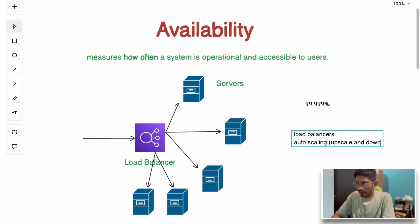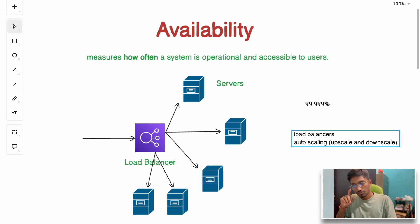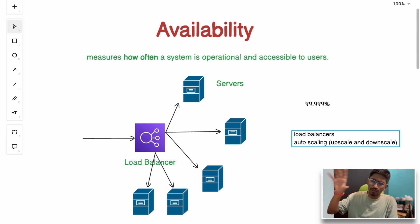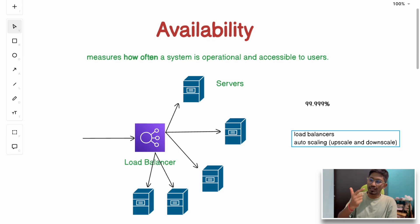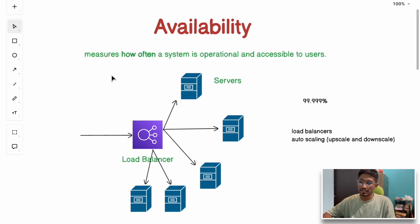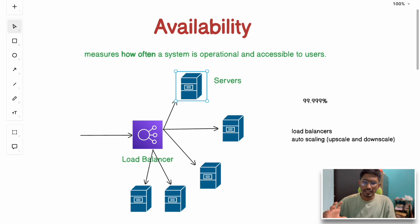Another technique is using CDNs — Content Delivery Networks — which involve having copies of data across multiple geographical locations so that user requests are served from the nearest available server. This ensures availability even if one or multiple servers fail. Availability and reliability might sound similar, but there is a thin line of difference between them.